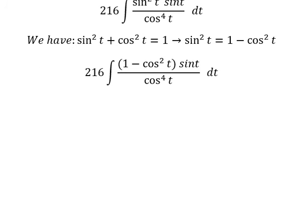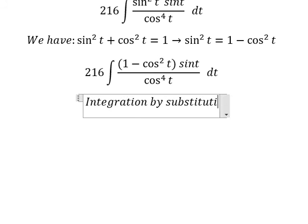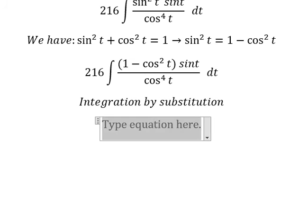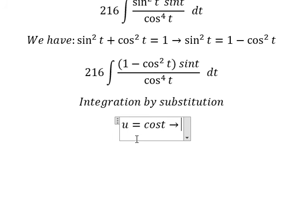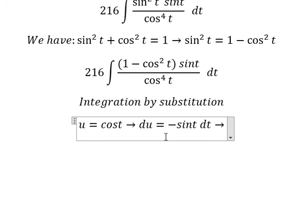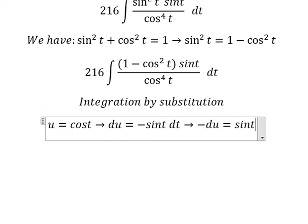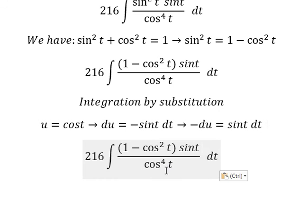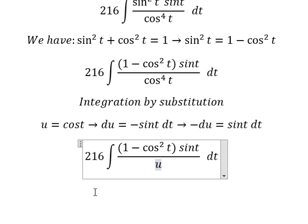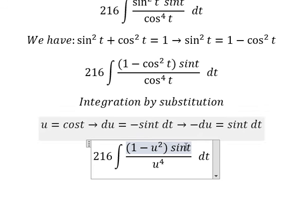Next, we can use integration by substitution. I will put u equals to cosine t. We need to find the first derivative for both sides, and we have du equals to negative sine t dt. Because we don't have the negative, I will move the negative to the left, giving negative du equals sine t dt. Then we replace cosine t with u, giving u to the power of 4, and sine t dt is replaced by negative du.